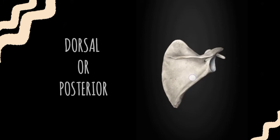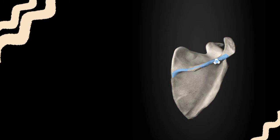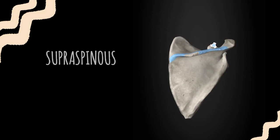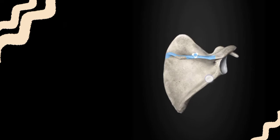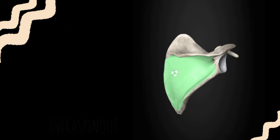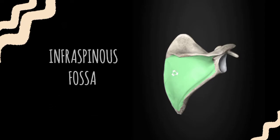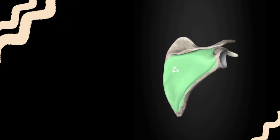If we rotate the scapula, the posterior surface is divided into two parts by the spine of the scapula. The upper part is called the supraspinous and the lower part is called the infraspinous. The infraspinous is comparatively larger than the supraspinous. The supraspinous has a fossa called the supraspinous fossa, and the infraspinous has a fossa called the infraspinous fossa, which give origin to the supraspinatus and infraspinatus muscles respectively.